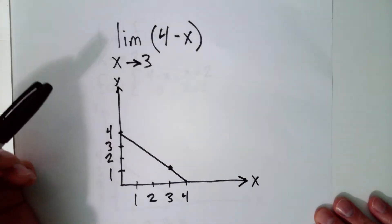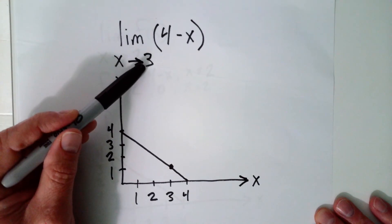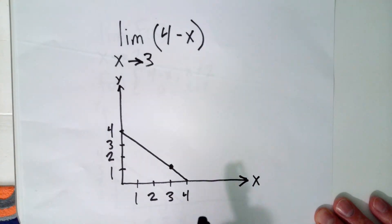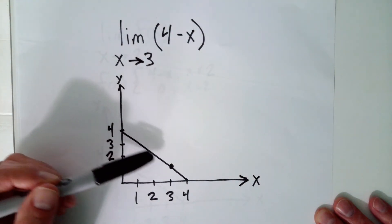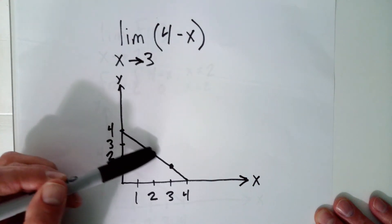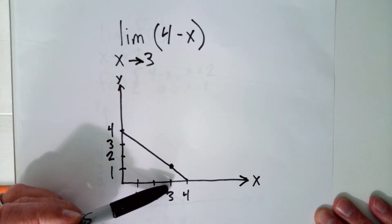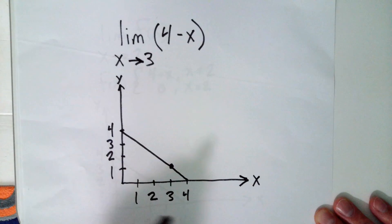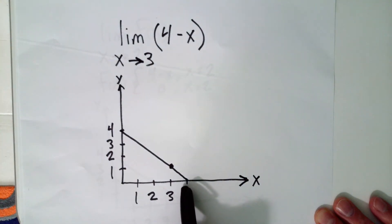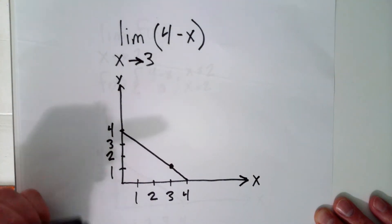How do we do these limits? Basically, it's asking us: as x gets closer and closer to 3 from the left, and as x gets closer and closer to 3 from the right, does the value of the function approach the same value? This line is the value of the function at each x. If x is approaching 3, it looks like the value of the function is approaching 1. And if x is approaching 3 from the right, it again looks like the value is approaching 1. So this one is straightforward.